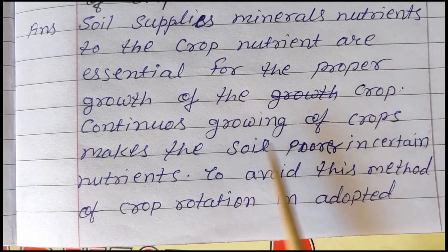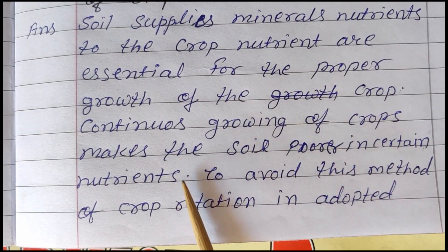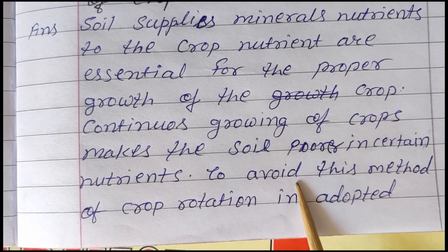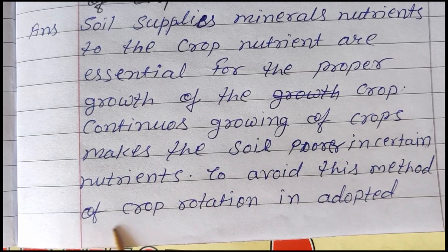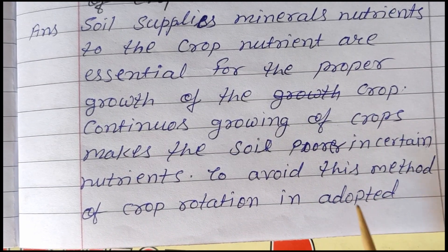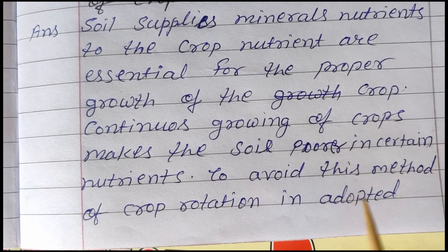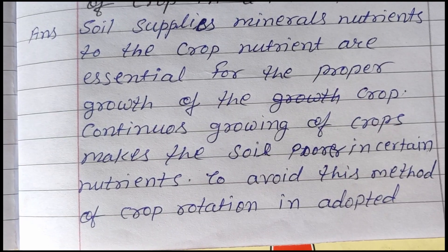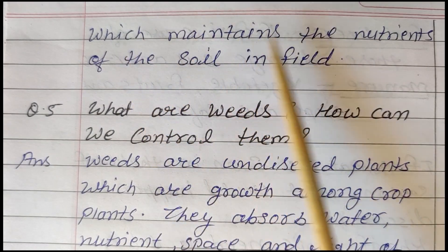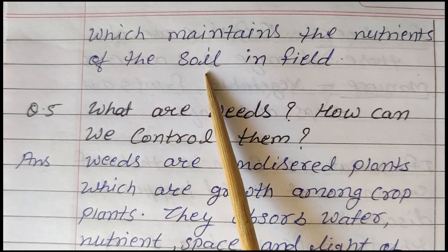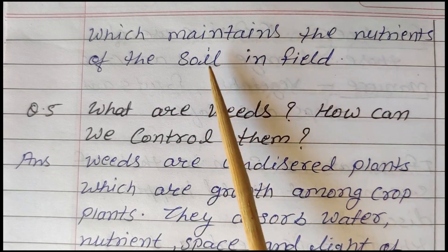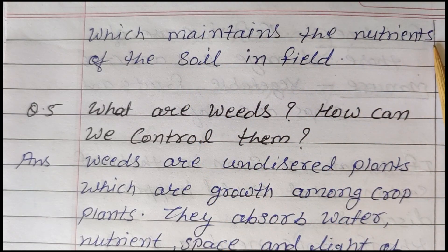If we continuously keep sowing crops, the soil becomes weak and deficient in minerals. (Mitti mein khanij tattvon ki kami ho jayegi.) To avoid this, crop rotation is adopted, which maintains the nutrient levels of the soil. (Mitti mein khanij tattvon ka maintenance banaye rakhne ke liye faslein rotation mein boni chahiye.)